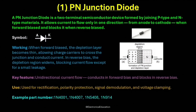One of the most common uses of a P-N junction diode is in rectification. In power supplies, it converts alternating current, or AC, into direct current, or DC. Without diodes, DC power supplies and chargers would not work. These diodes are also used for polarity protection so that circuits are not damaged if a power supply is connected the wrong way. They are used in signal demodulation to recover information from amplitude modulated signals, and in voltage clamping circuits to protect sensitive components from voltage spikes.